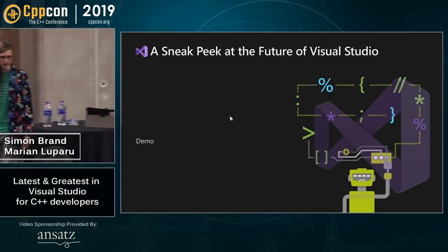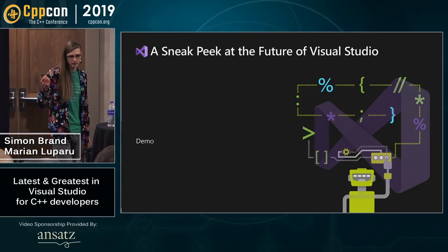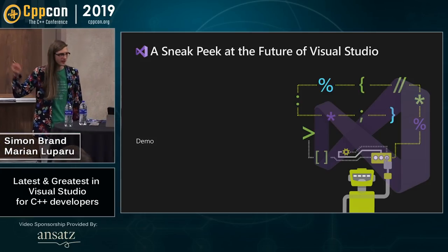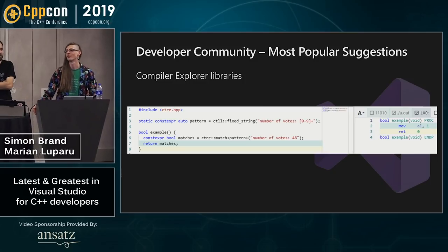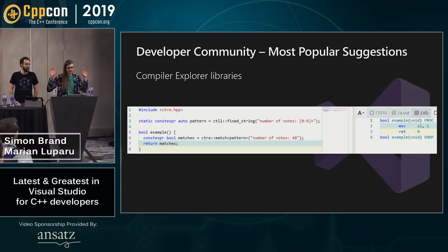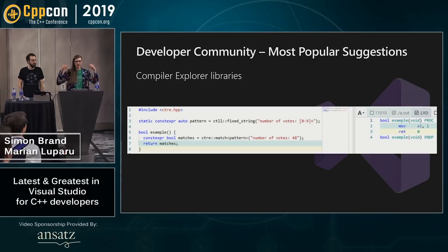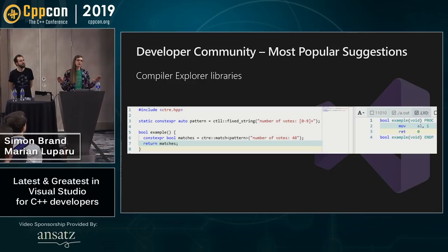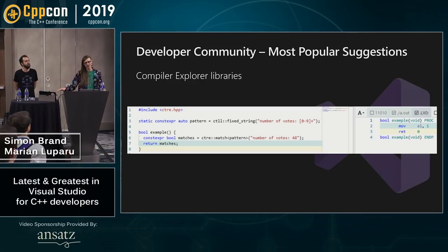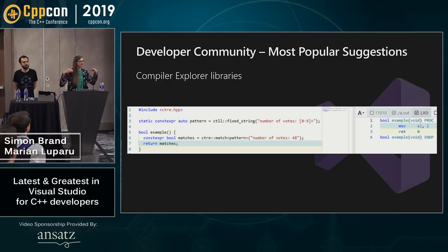Developer Community is how we get suggestions from all of you. If you send suggestions and upvote issues, we see them and act on them. One of the most upvoted suggestions was being able to use libraries in Compiler Explorer with MSVC — and today you can do that. Go to godbolt.org, switch to an MSVC compiler, and use various libraries installed there.